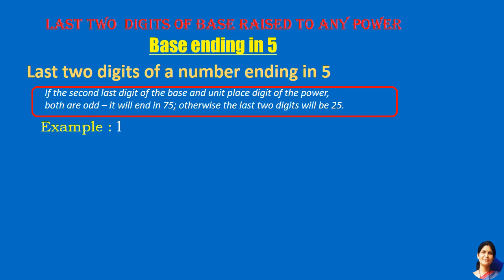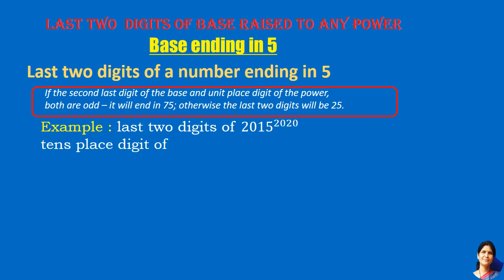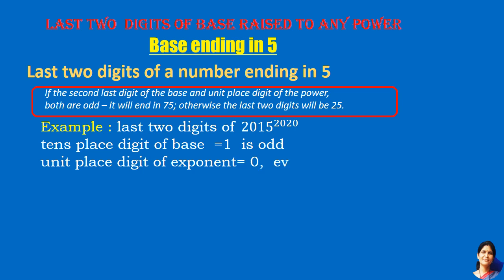Interesting example: 2015 raised to the power 2020. The tens place digit of the base is 1, and the units place digit of the exponent is 0, which is even. So the last two digits will be 25.